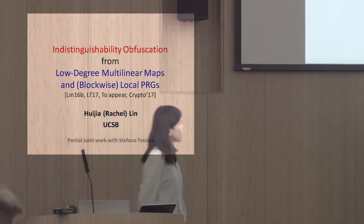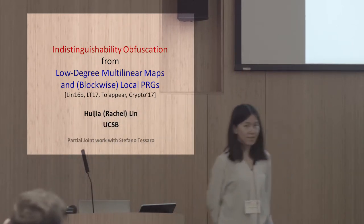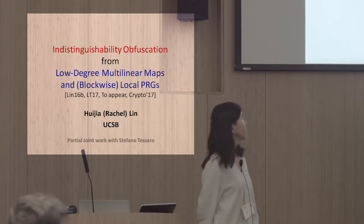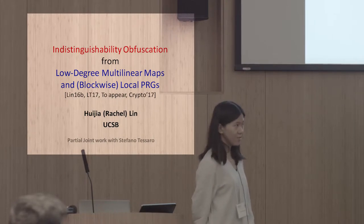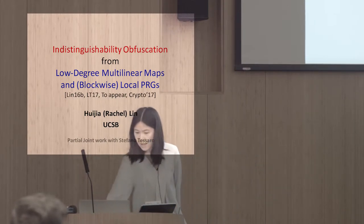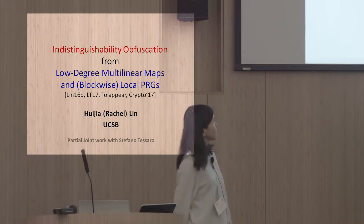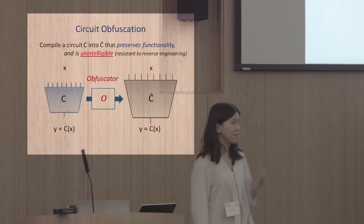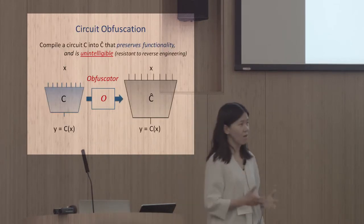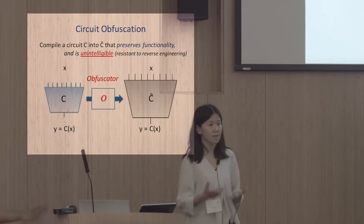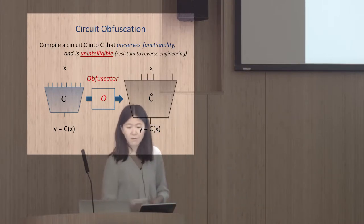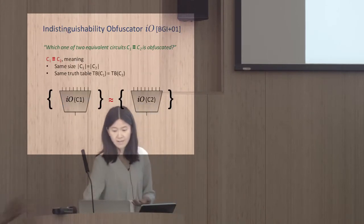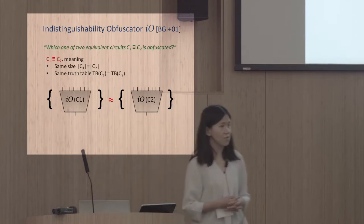There are lots of different notions of security for program or circuit obfuscation. We talk about the weakest one called indistinguishable obfuscator, or IO for short in the rest of the talk. It is the weakest security notion because it really has one bit of information: which of the following two equivalent circuits C1 or C2 is being obfuscated. By equivalence, we mean that the two circuits need to have the same size and, more importantly, identical truth tables.